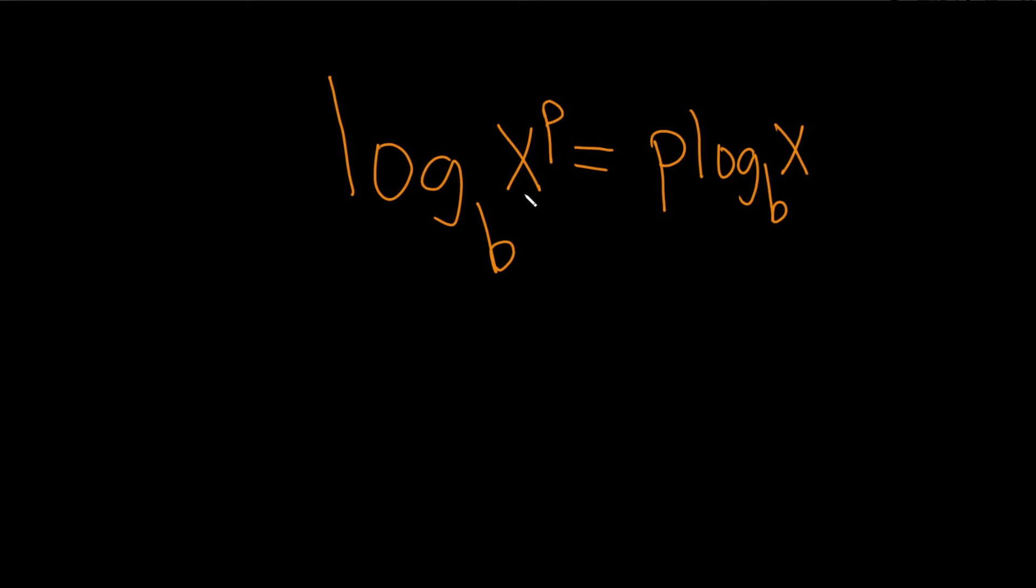So here x is positive, p is our power, and b is a base, so it's bigger than 0 and it's not 1. So proof.